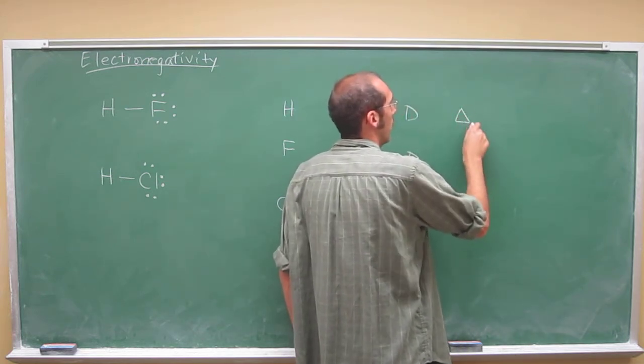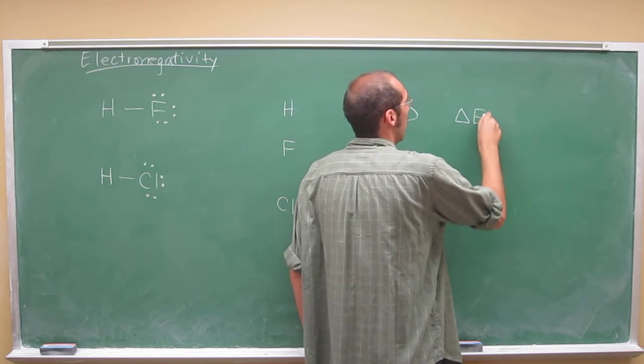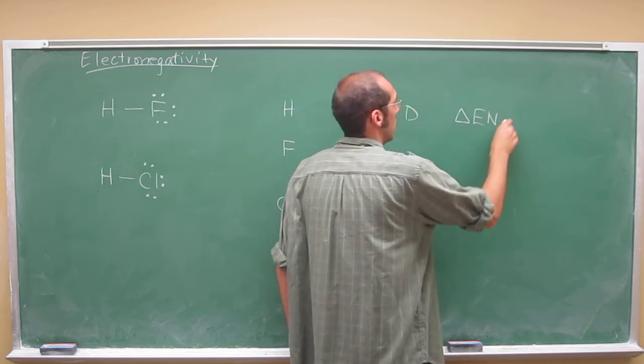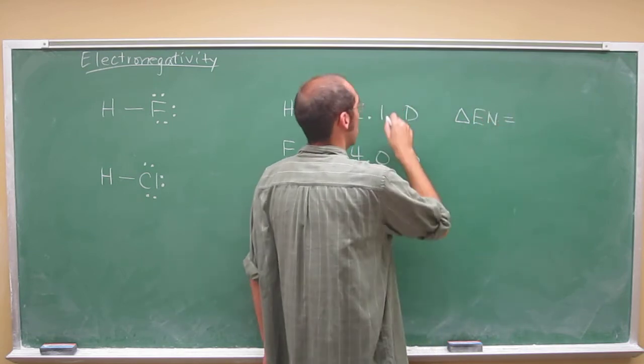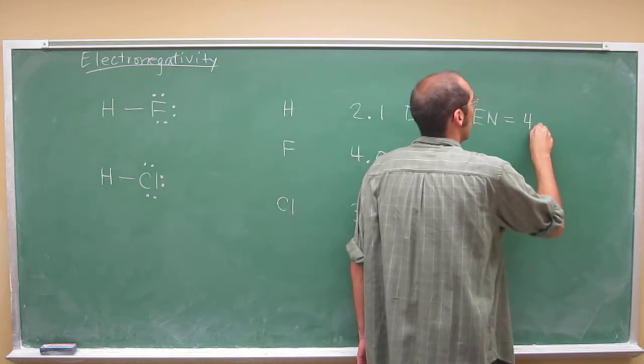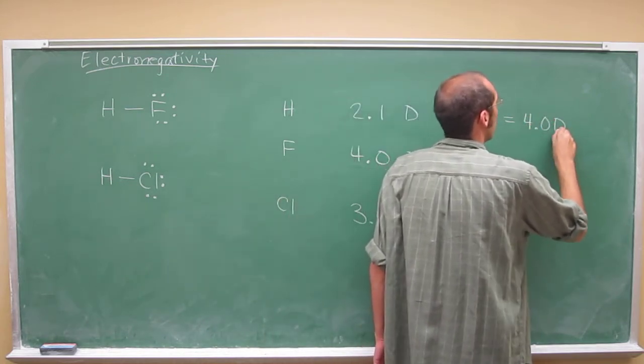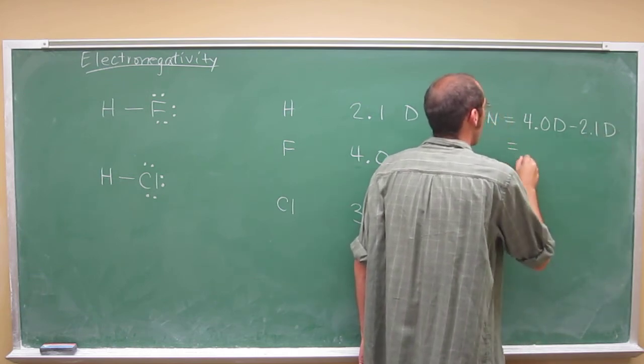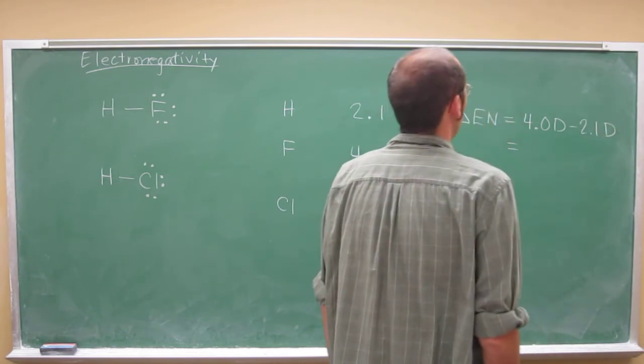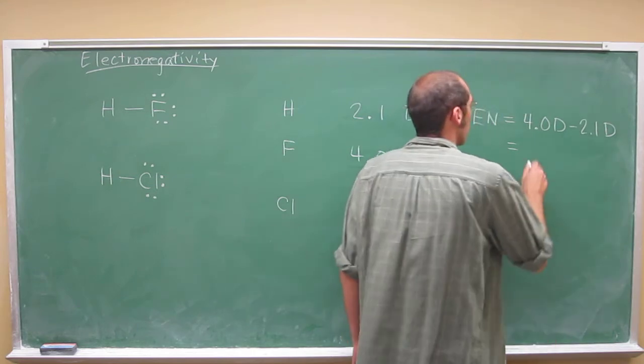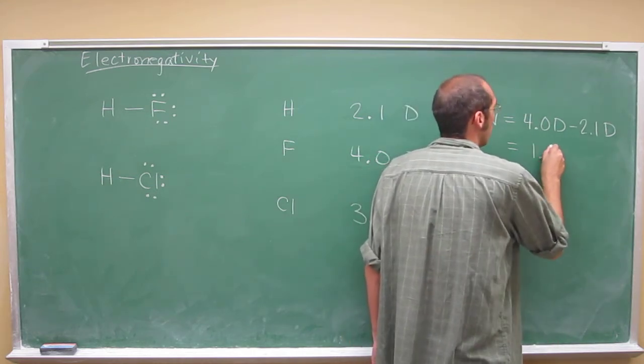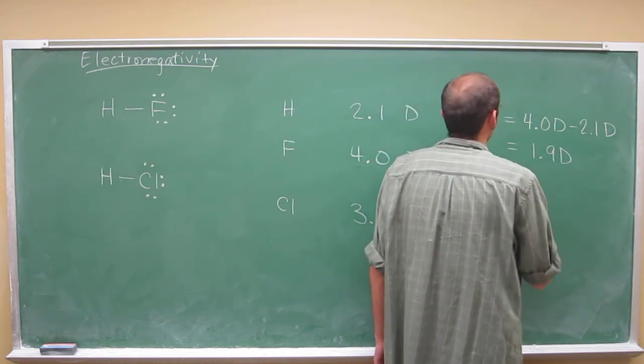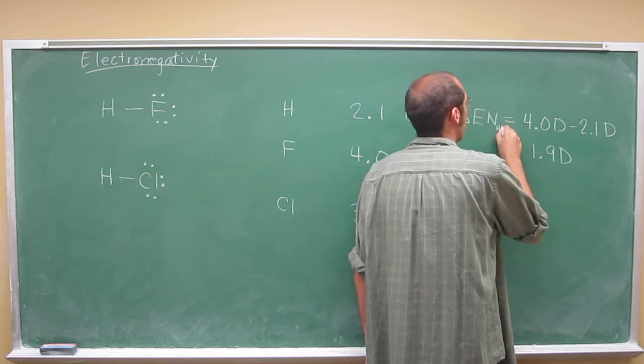This little triangle means change in electronegativity. The change in electronegativity between these two is going to be 4.0 Debye minus 2.1 Debye. When you do that, of course, it's going to be 1.9 Debye. And that's for the HF bond.